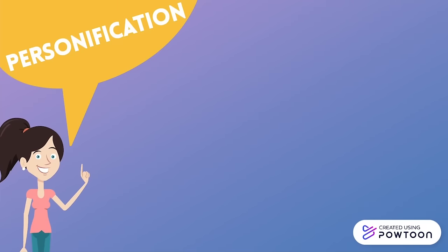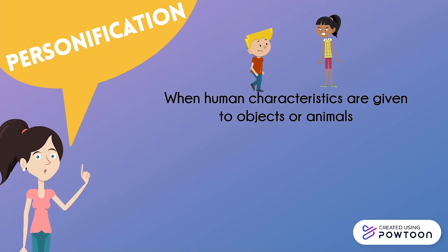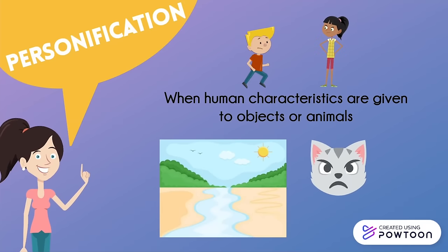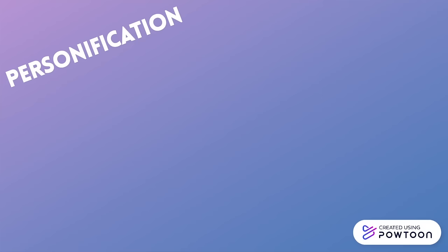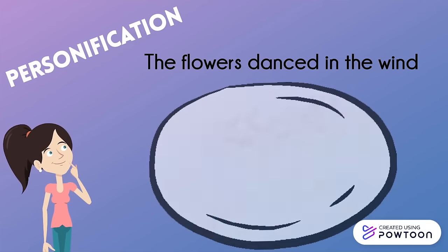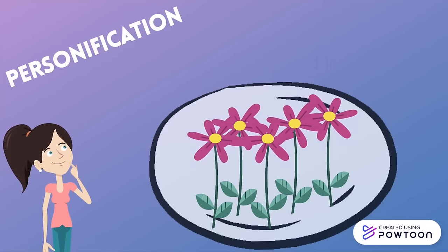Personification is achieved when human characteristics such as actions or feelings are given to non-human things like objects or animals. It is used to make these objects more relatable and is commonly used in poetry. For example, 'The flowers danced in the wind' uses personification to give the flowers the human quality of being able to dance. This creates an image in the reader's mind of flowers moving about gently in the blowing breeze as though they are dancing.